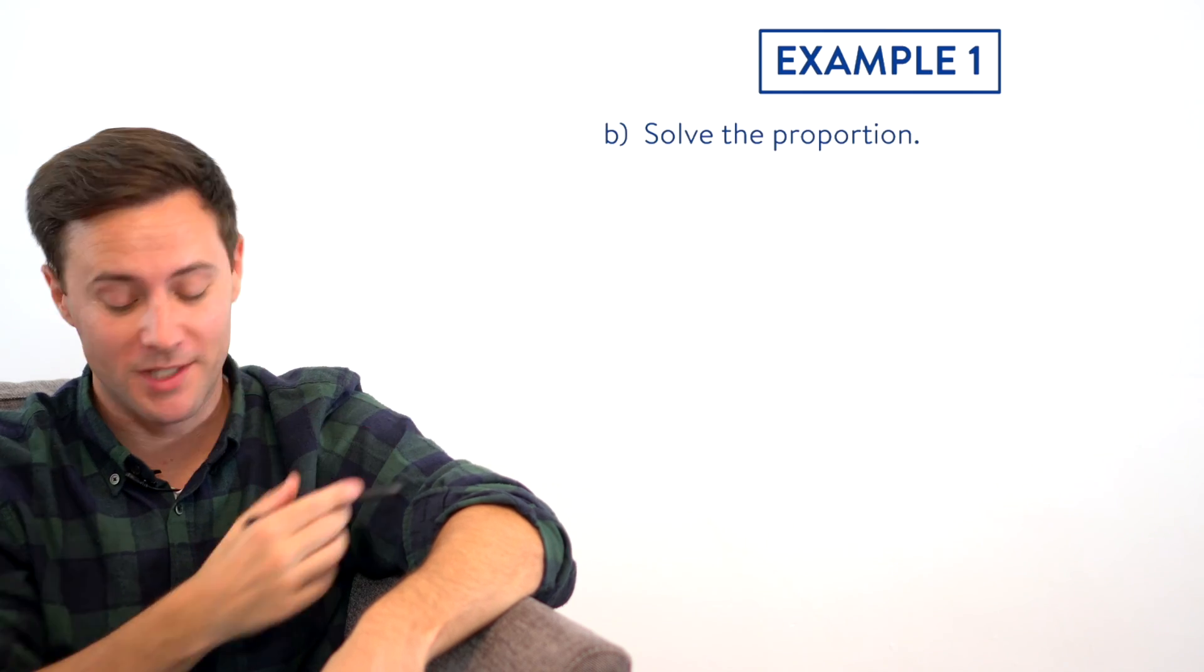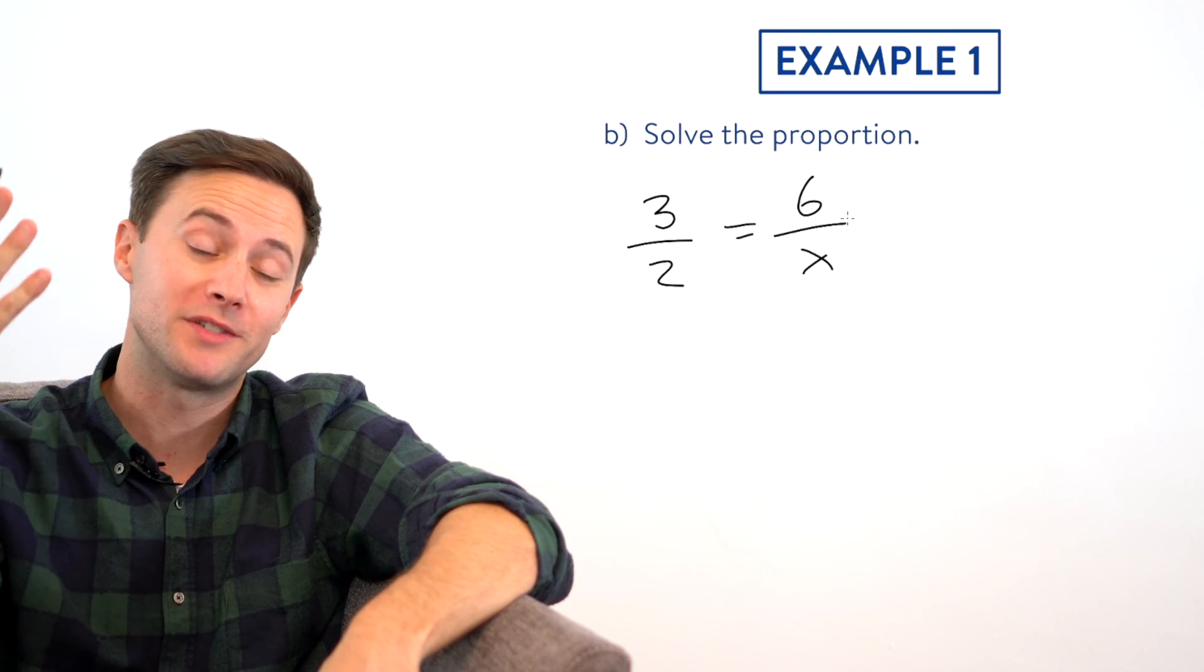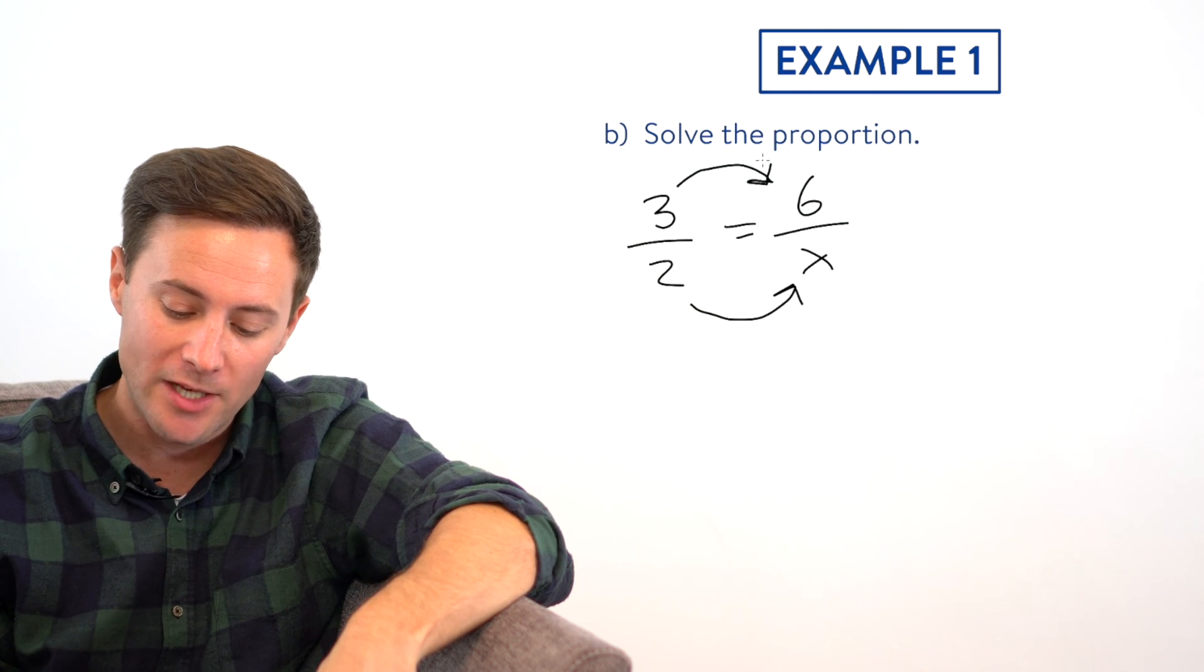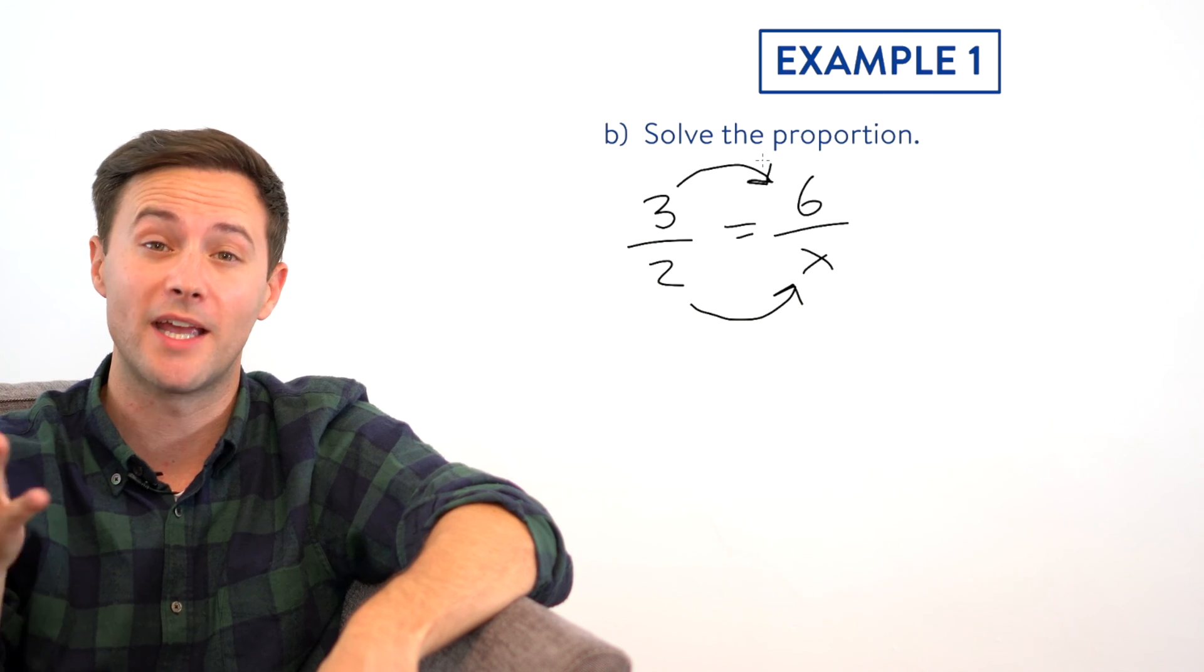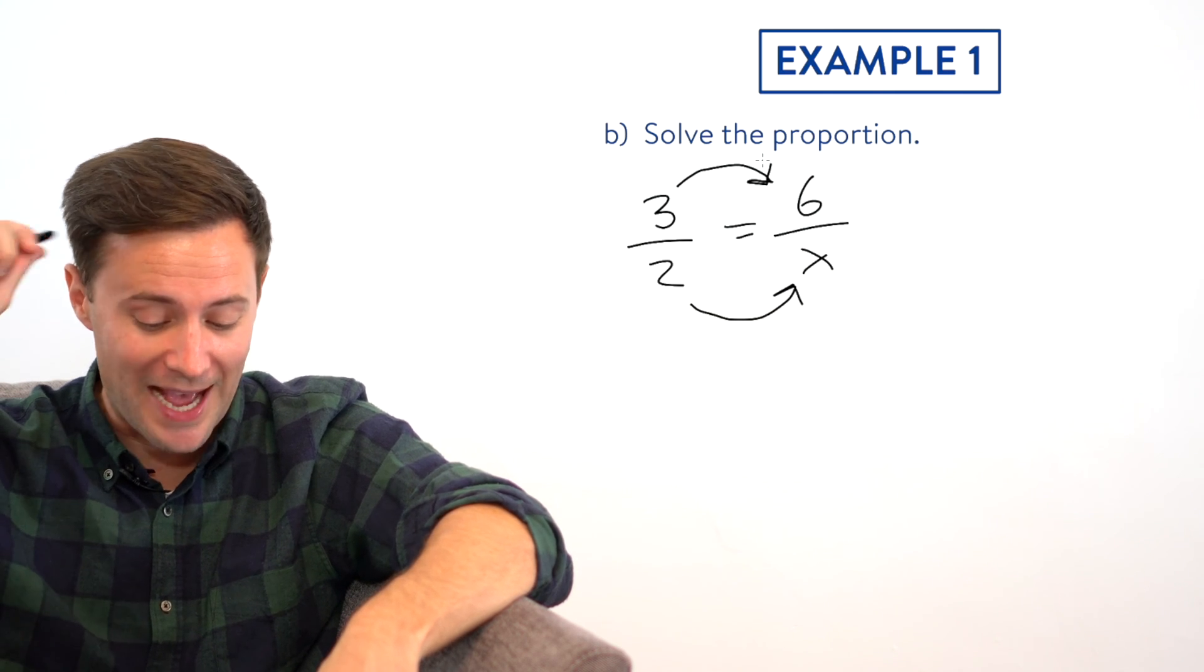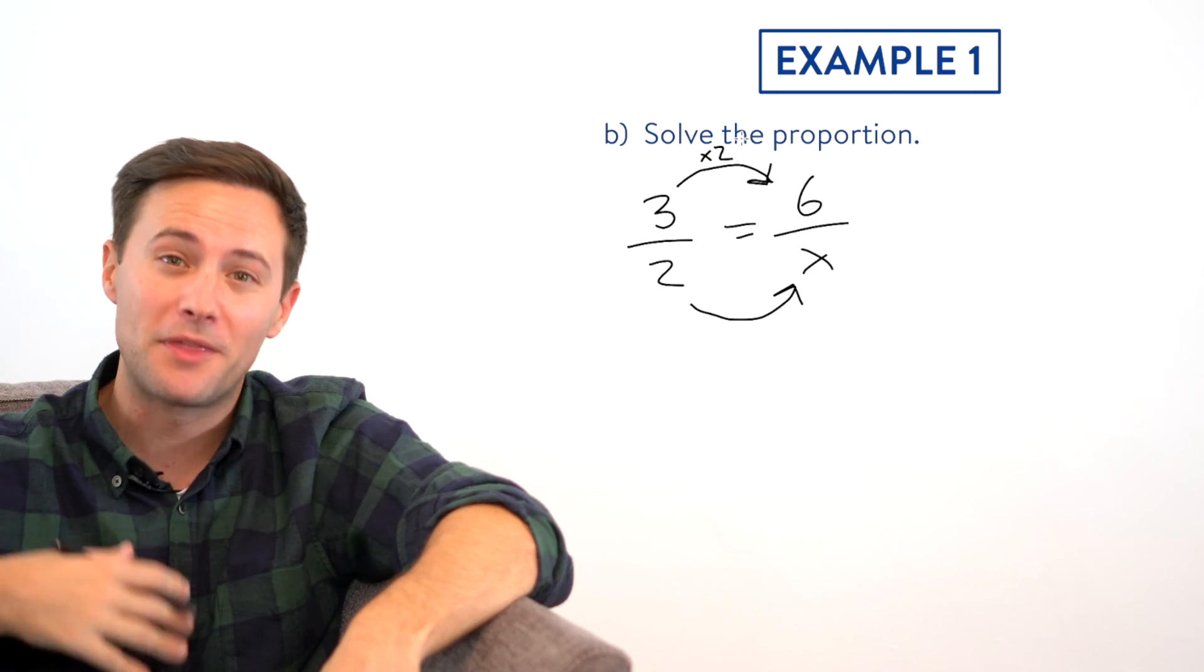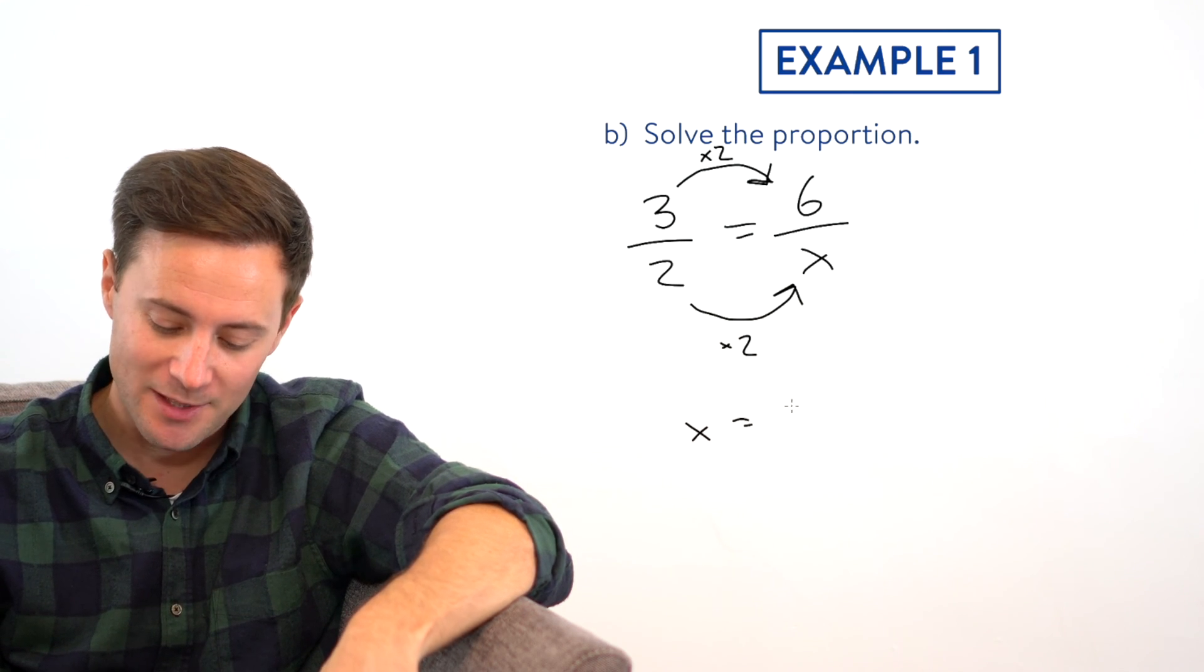Part B, solve the proportion. We're trying to find the value for x, which represents how much Sprite we would need to add if we do six parts orange juice. We know that these two ratios are equal to each other. So they need to be equivalent, which means anything that I do to a numerator, I have to do the exact same thing to the denominator or else they wouldn't stay equivalent. So we can ask ourselves, how do we go from three to six in the numerator? Times two. And we would do the exact same thing to the denominator now. So two times two means x has to be equal to four.